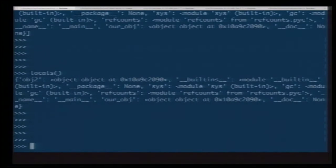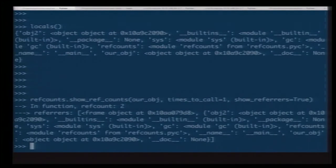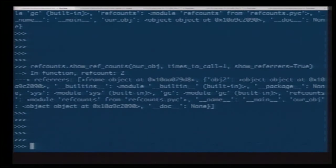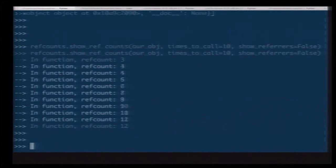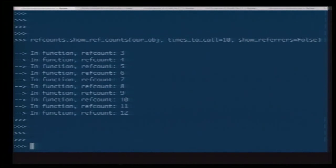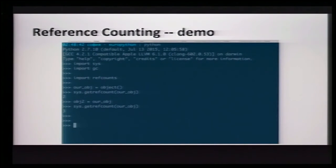So, what happens to the reference count on an object if we pass it as an argument to a function? Well, we'll use that function that I just showed you. So, first we'll call it, we're going to pass in our object and we'll have it not, we'll just call it once and we will show the details about the referrers this time. So, we've still got that local namespace but there's something new, this frame object in there that now also owns a reference to our object. And if we have, if we call it again this time, we'll have it call itself recursively a bunch of times and we'll turn off the overwhelming debug output. So, we see that each time we call the function, the reference count increases by one and if we were to look at the details of the referrers, we'd see another frame object being added to the referrers with each call. Cool.